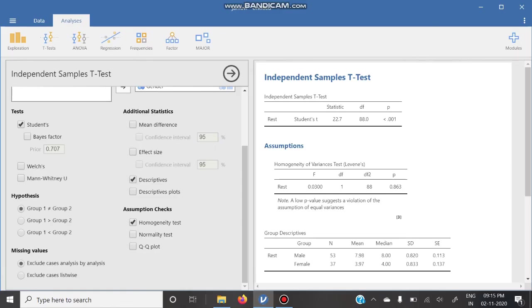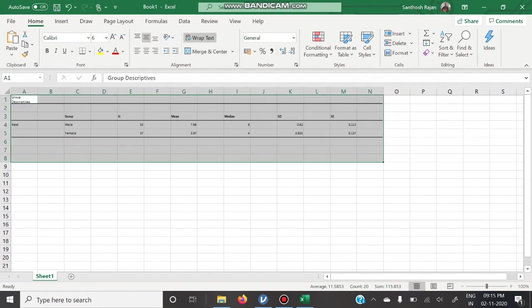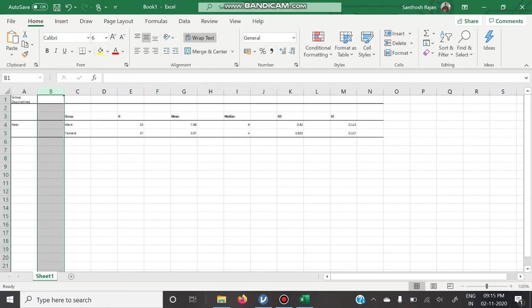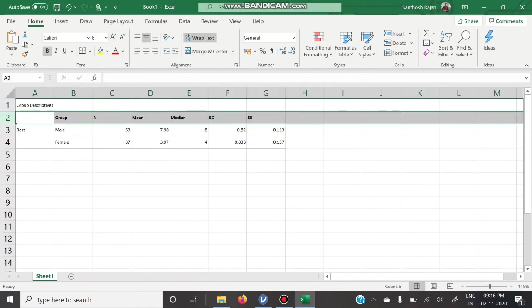Copy the group descriptives and paste it in an Excel sheet. Merge and center to make everything right. There are certain free columns here. I will delete those columns. The group descriptives is ready.